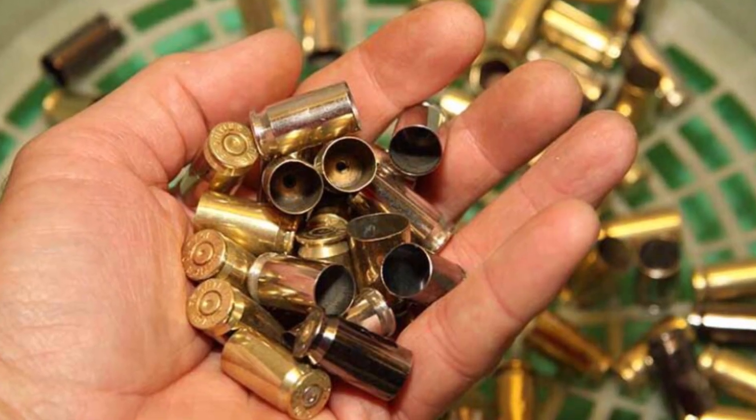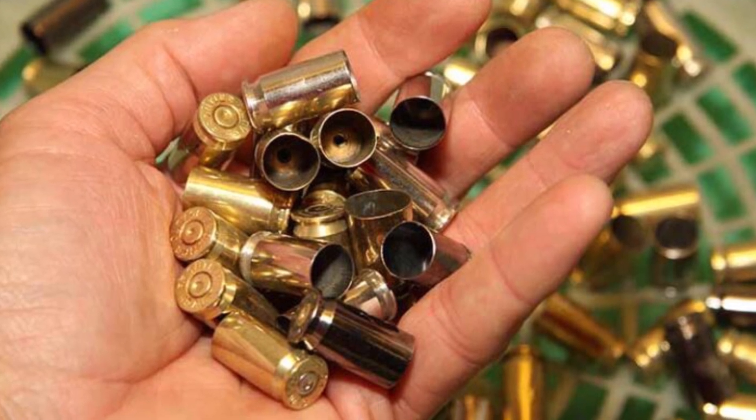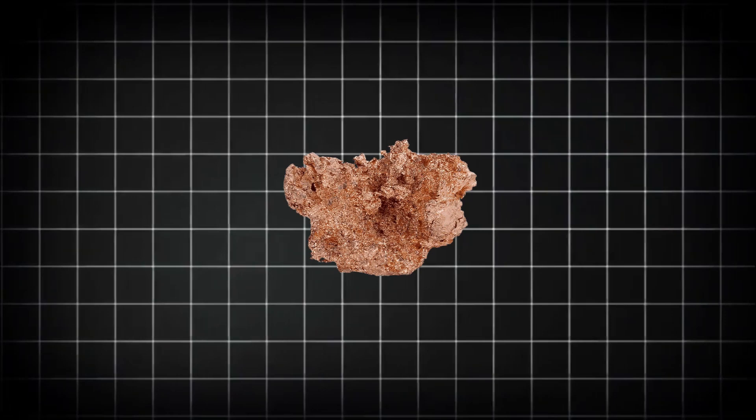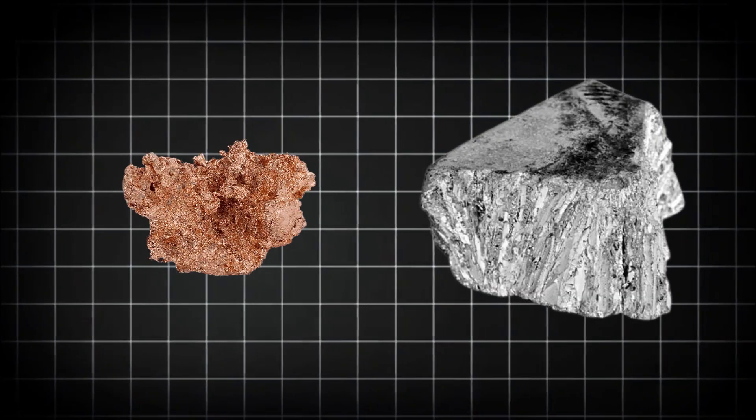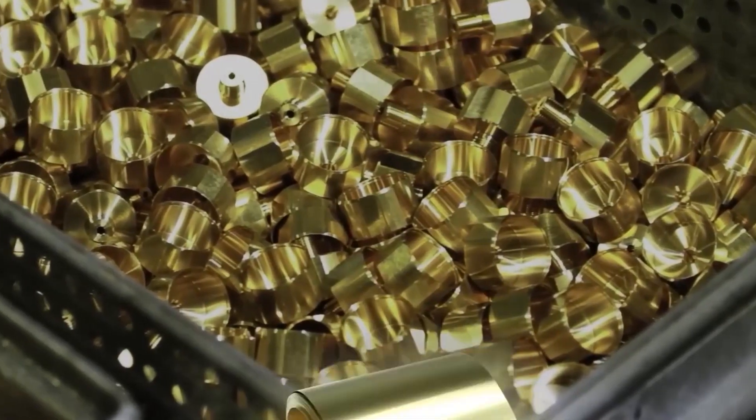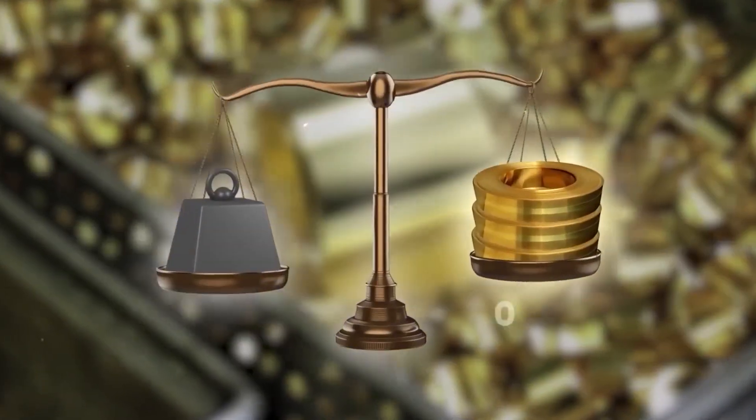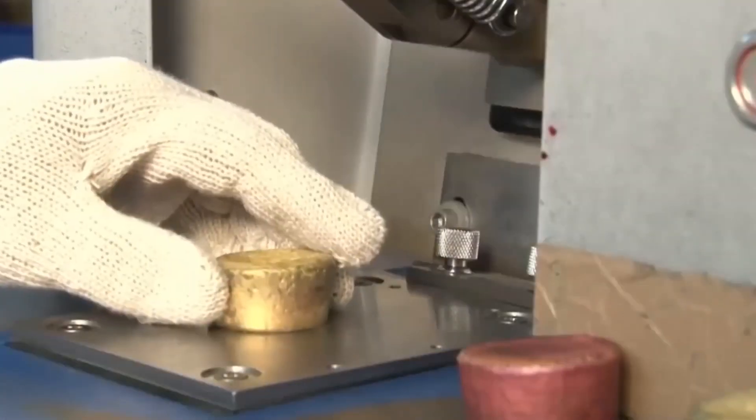For the brass cases, manufacturers typically use cartridge brass, an alloy of 70% copper and 30% zinc. This specific combination provides the perfect balance of strength, malleability, and corrosion resistance.